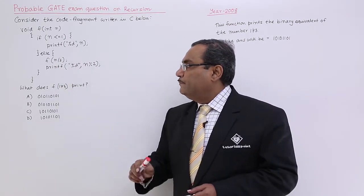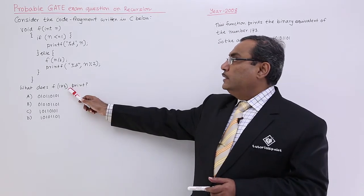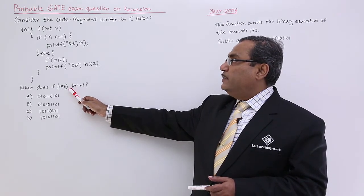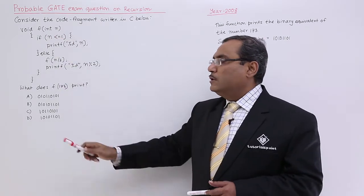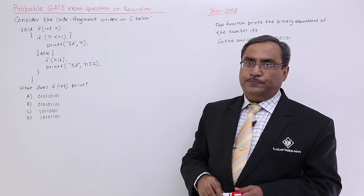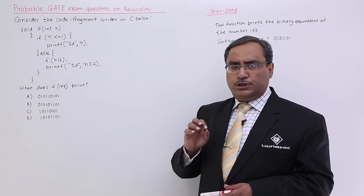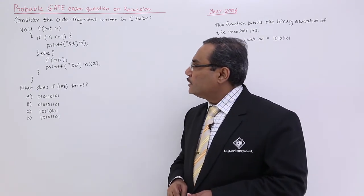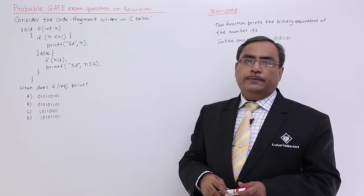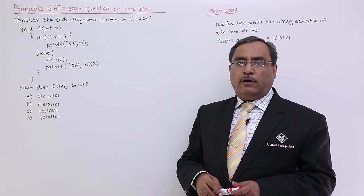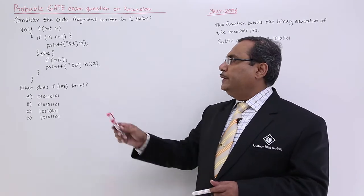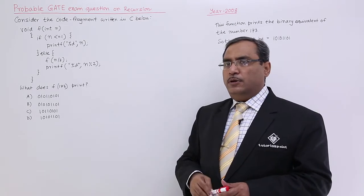So that is the problem and it is telling that if we pass 173 as the value of n to this particular function what will be the required output. You see if you look at this very function and if you look for the logic written in this particular function actually it is calculating the binary equivalent of n. It is calculating the binary equivalent of a number.